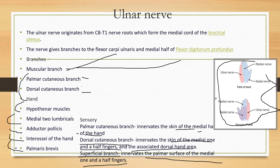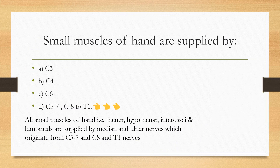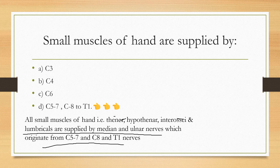So our answer will be C5 to C7 and C8 to T1, because C5 to C7 and C8 to T1 are nerve roots of the median nerve, and C8 to T1 are the nerve roots of the ulnar nerve. All small muscles of the hand — the thenar muscles, hypothenar muscles, interossei, and lumbricals — are supplied by the median nerve and the ulnar nerve, which originate from C5, C7, C8, and T1. Thank you for watching, bye.